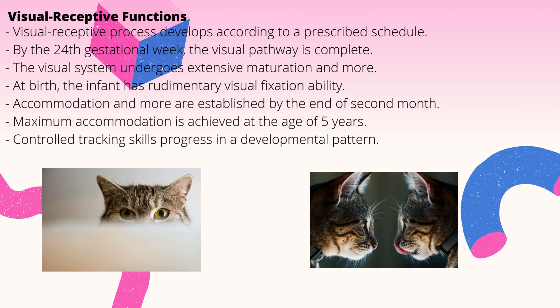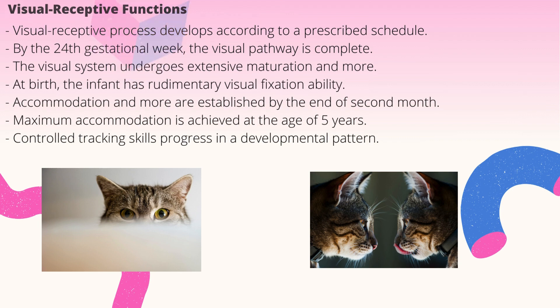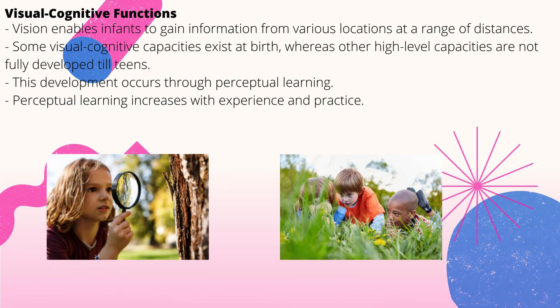The child should be able to sustain this skill for a continued time at a fixed distance. Tracking skills progress in a developmental pattern from horizontal eye movement to vertical, diagonal, and circular eye movement. Vision enables infants to gain information from various locations across a range of distances, and is also a means for infants to organize information received from other senses.